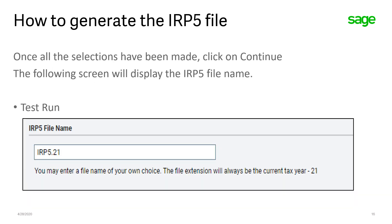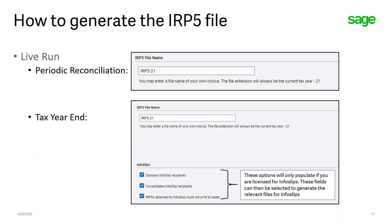Once all the selections have been made, click on Continue. The following screens will display the IRP5 file. If you're doing a test run, it defaults to IRP5.21 — the 21 will indicate the tax year that you are in. If you're doing a live run for the periodic reconciliation, the file name looks exactly the same as when doing a test run. When doing the tax year end, the file name is also the same, however you will have additional ticks at the bottom, which will only populate if you are licensed for infoslips.